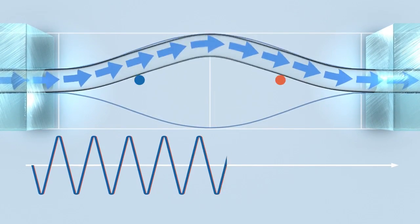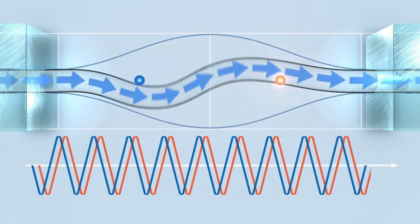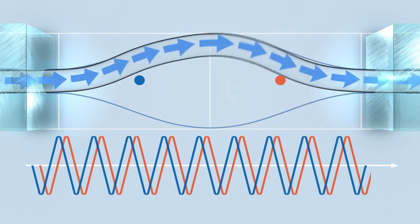Measurement is based upon the Coriolis principle. As flow starts, this effect causes the oscillation phase to change in direct proportion to the mass flow rate.